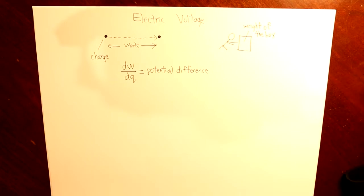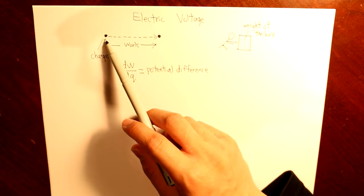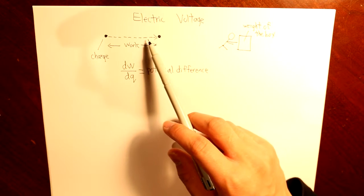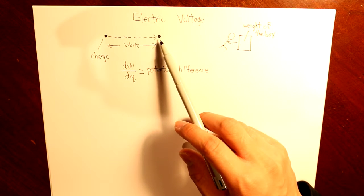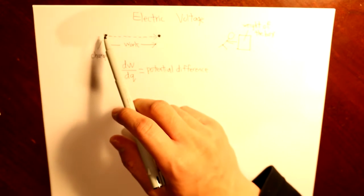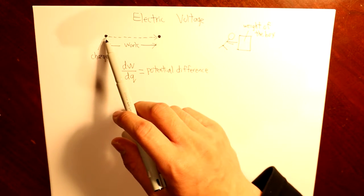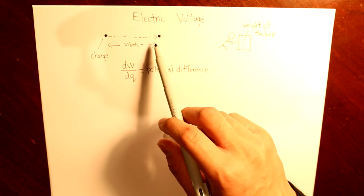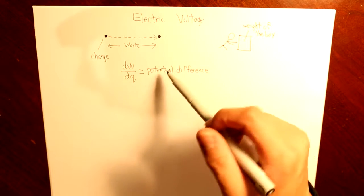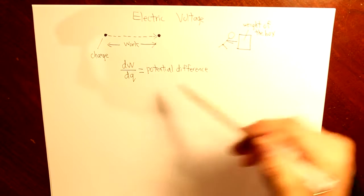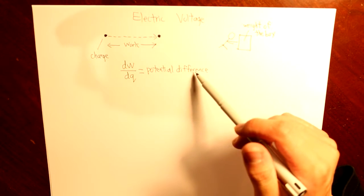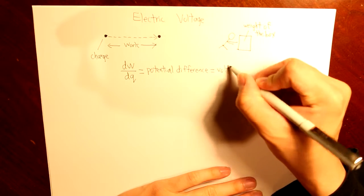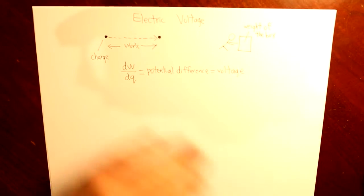Let's take an example where the electron is stationary and then it moves to this position. The potential here as a reference would be zero, and the potential here would equal some value greater than zero, so there is a potential difference.